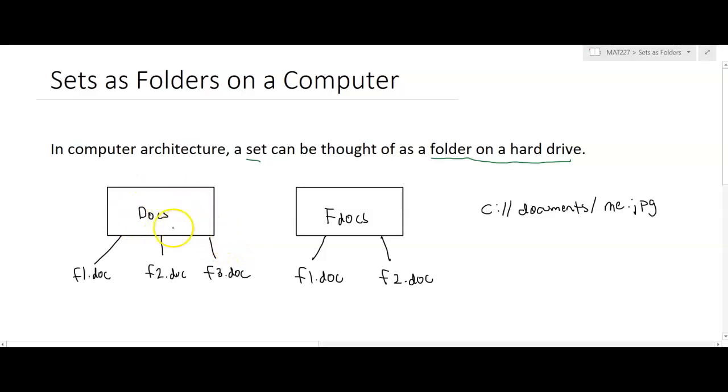So this folder itself can be thought of as a set. And while we typically don't in mathematics label sets by their full name, we certainly can. So usually we use a capital letter, but let's call this set docs just for the sake of argument. And inside of this set, we have three elements, which are these three files. So we have f1.doc, f2.doc, and f3.doc.